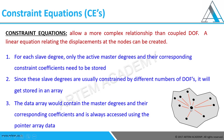Since these slave nodes are constrained by different degrees of freedom, the data gets stored in an array. The master node is connected to slave nodes through equations, and those equations get stored in an array. Finally, the connectivity between the equations is stored in an array, and when calculating results, the slave node displacements are obtained directly from that array. Now we talked about the equation — let's see what it is.